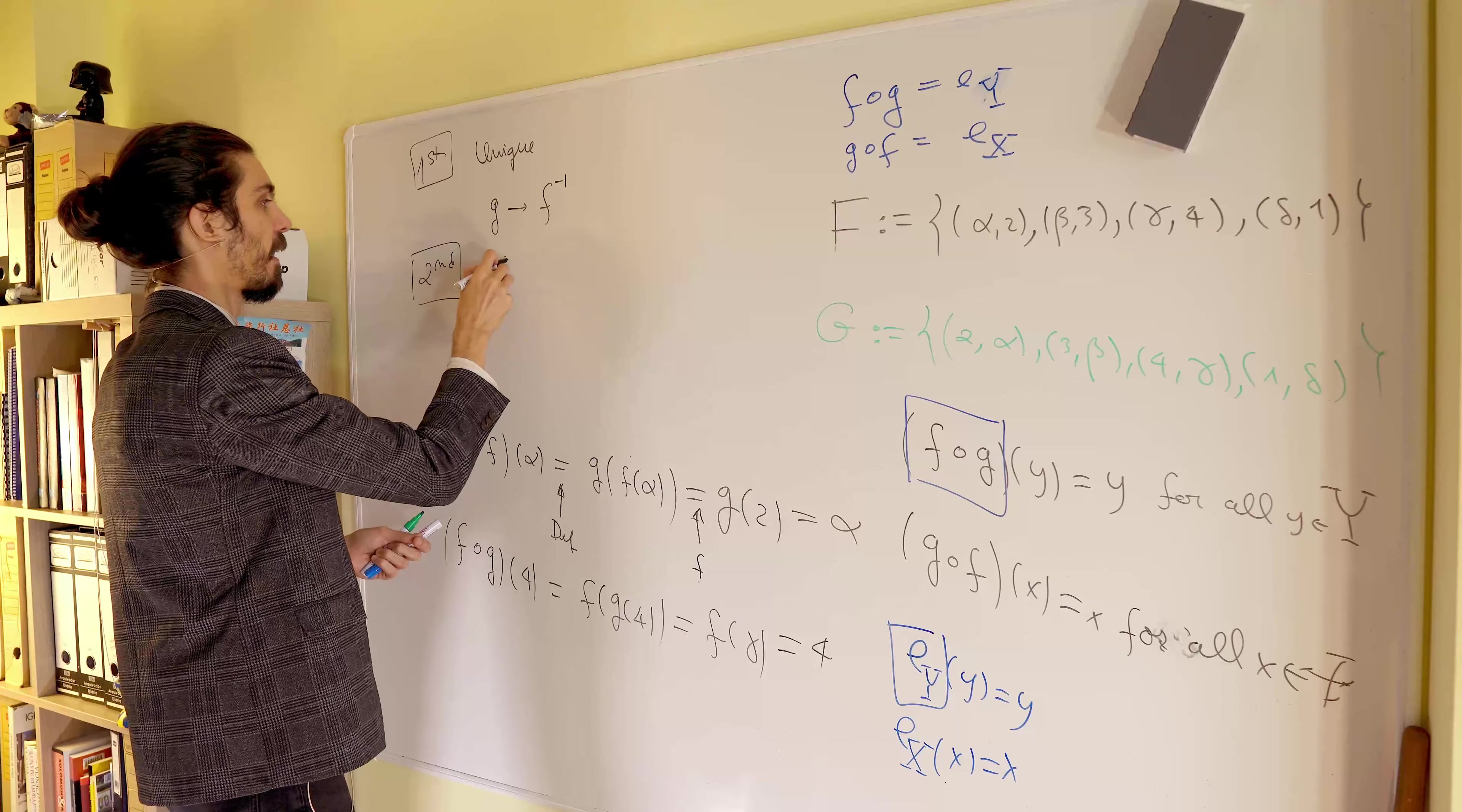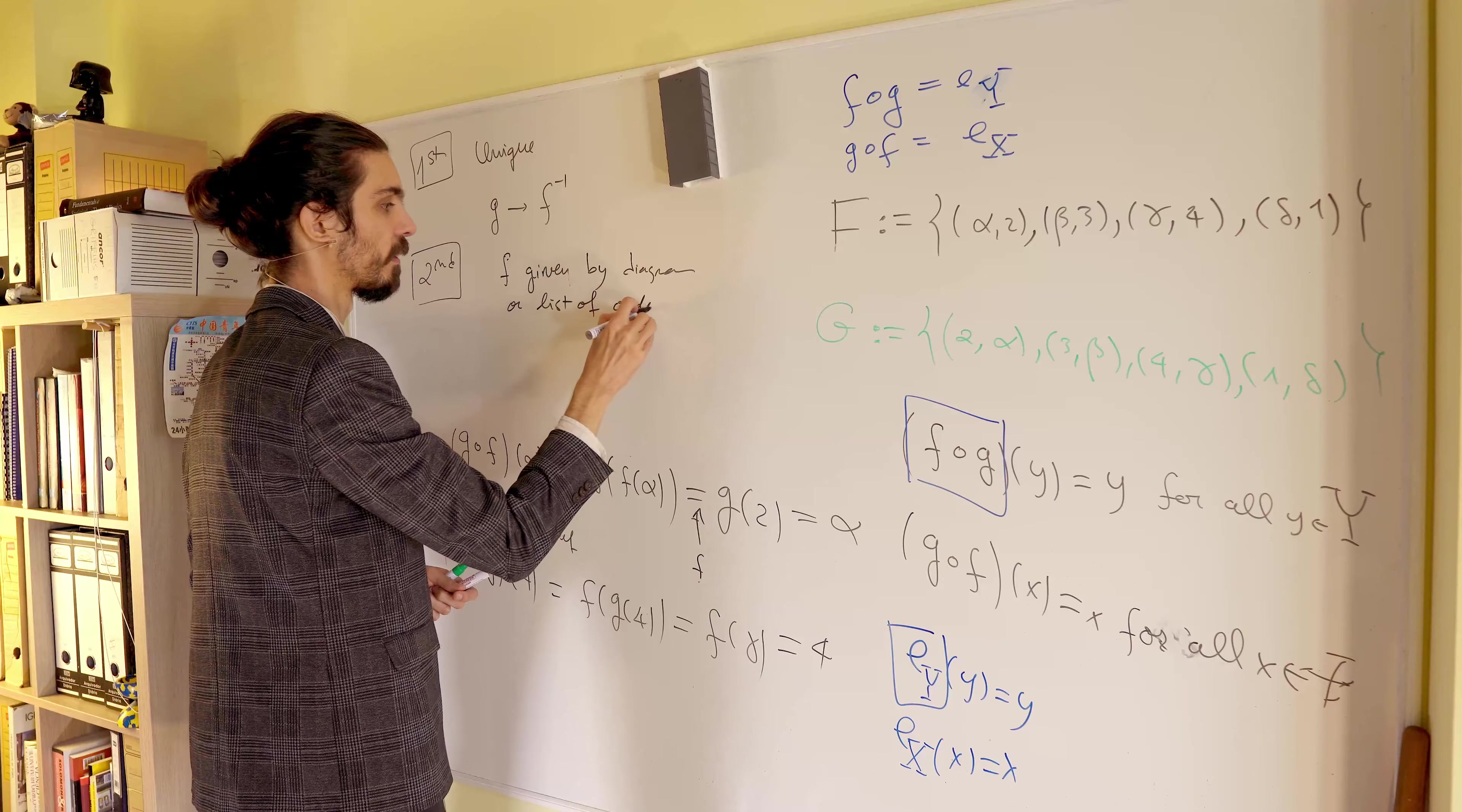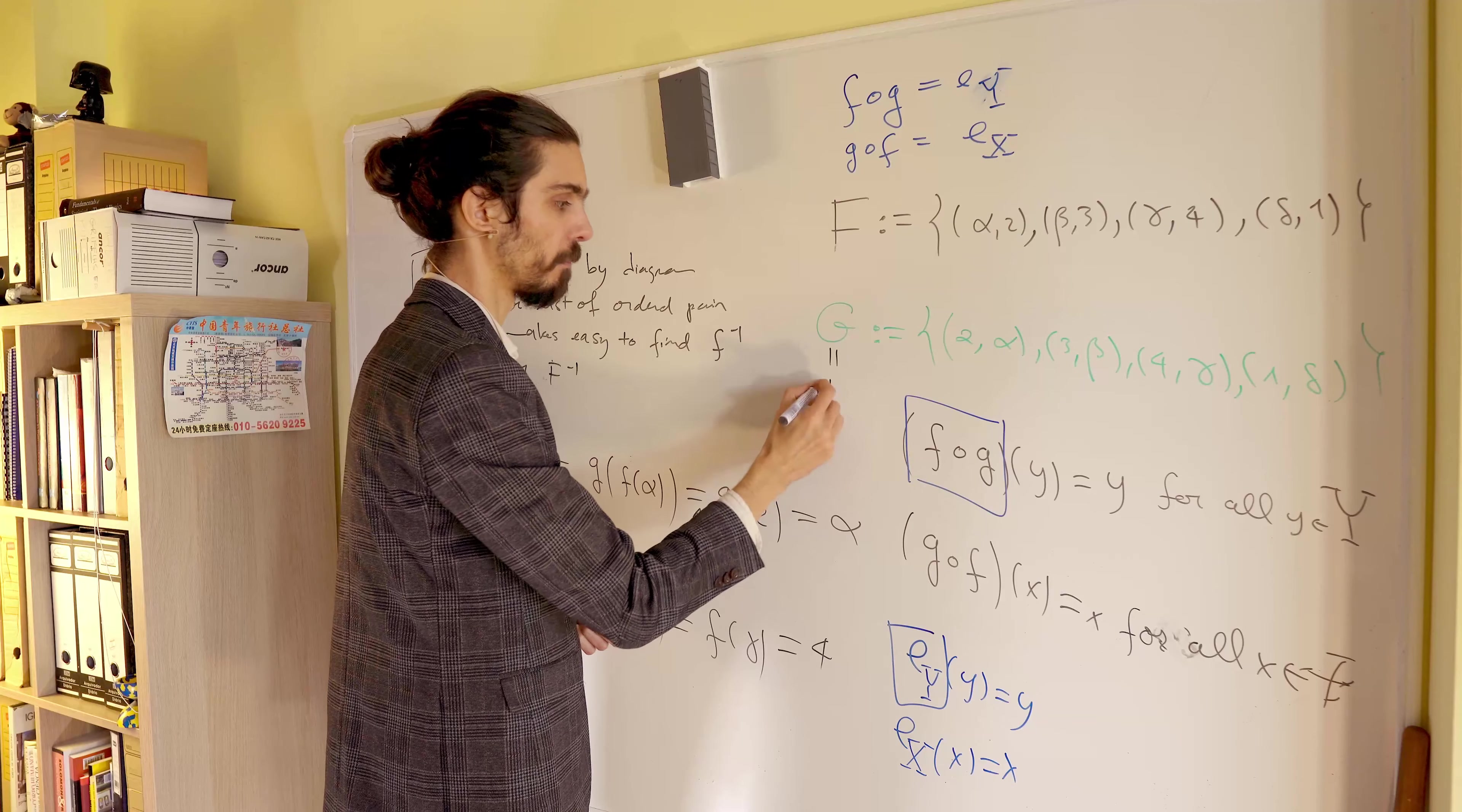So, f given by graph, or should I say diagram, it's probably more clear to say diagram. Diagram, or list of ordered pairs makes easy to find f minus 1 or big f minus 1. Big f minus 1 is this thing here.